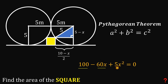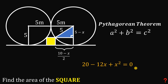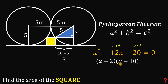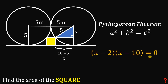Since 5x² − 60x + 100 = 0 is divisible by 5, dividing through gives x² − 12x + 20 = 0. We can factor this because 20 = 10 × 2 and 12 = 10 + 2, so the factored form is (x − 2)(x − 10) = 0. Checking: (−10)(−2) = +20 and (−10) + (−2) = −12. ✓